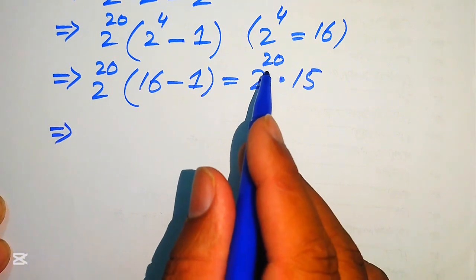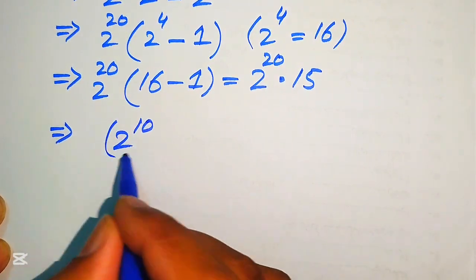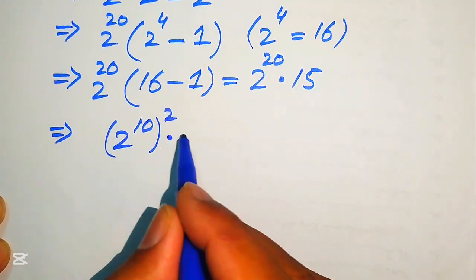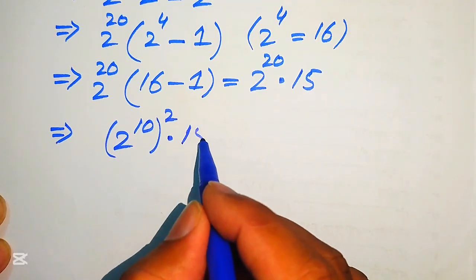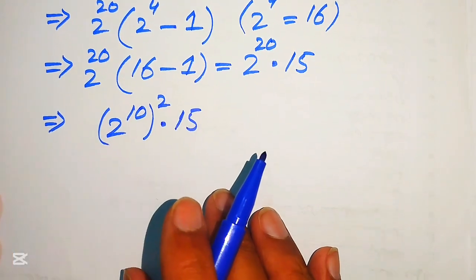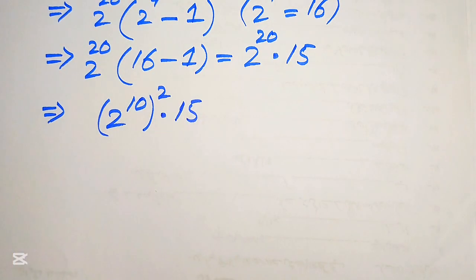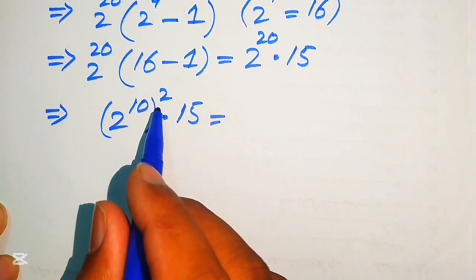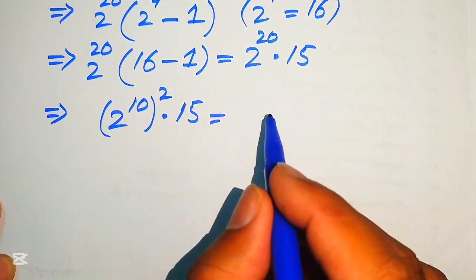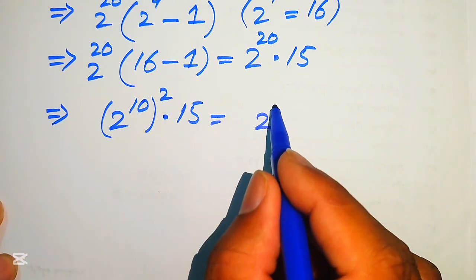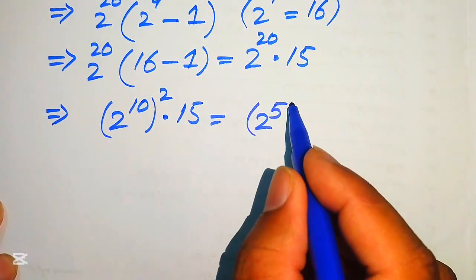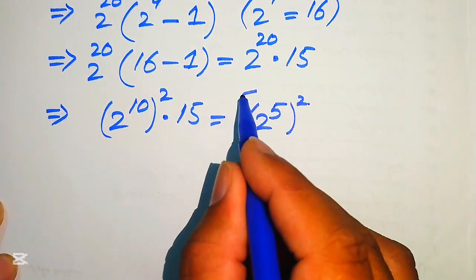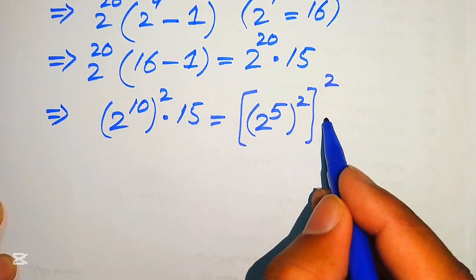We focus on 2 to the power of 20. We write it as 2 to the power of 10, whole squared. Because the calculator is not allowed, we continue breaking it down: 2 to the power of 10 equals 2 to the power of 5, whole squared. So 2 to the power of 20 becomes 2 to the power of 5, whole squared, whole squared, all multiplied by 15.